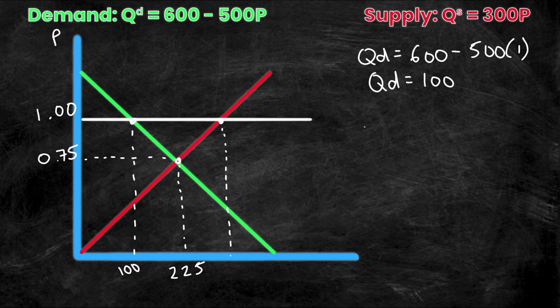Now let's do the same thing for QS. So QS is simply equal to 300 times P. Well, P is just 1. So QS is equal to 300.